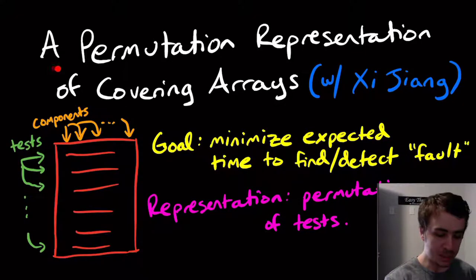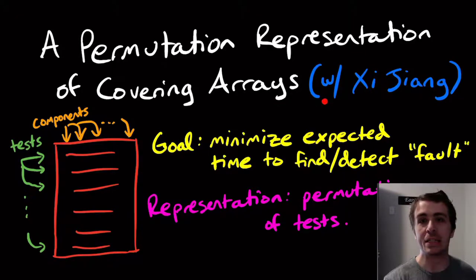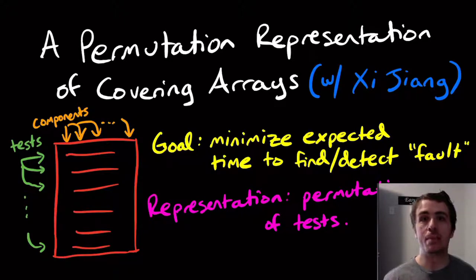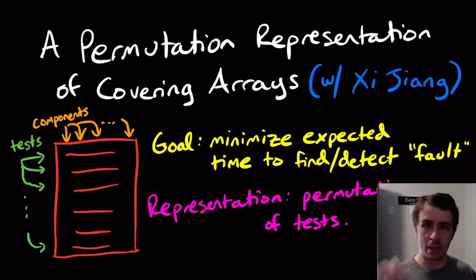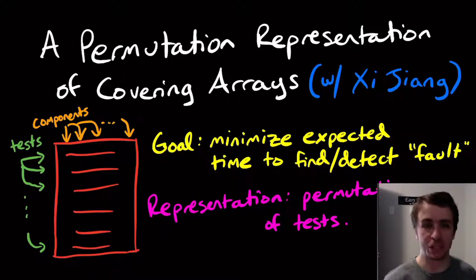Hi, this is a video presentation for our paper 'A Permutation Representation of Covering Arrays,' and this is joint work with my former student Chase Jiang. The goal here is to minimize the expected amount of time, or the number of tests, that we have to run to find or detect a fault that is present within a given system.